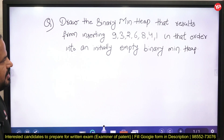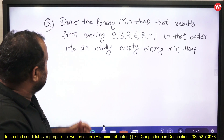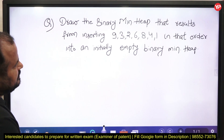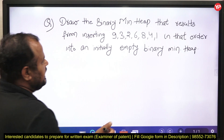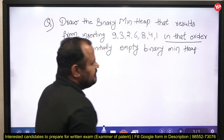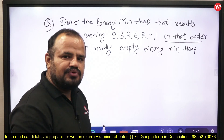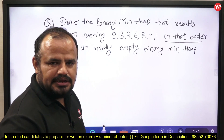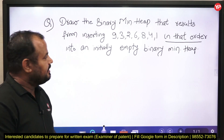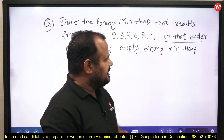Draw the binary min heap. We have to draw the min heap from the elements 9, 3, 2, 6, 8, 4, 1 in that order. That is an important point — in that order means we have to insert the elements one by one and then create the min heap. We cannot apply the build-heap method here. Keep in mind: into an initially empty binary min heap.